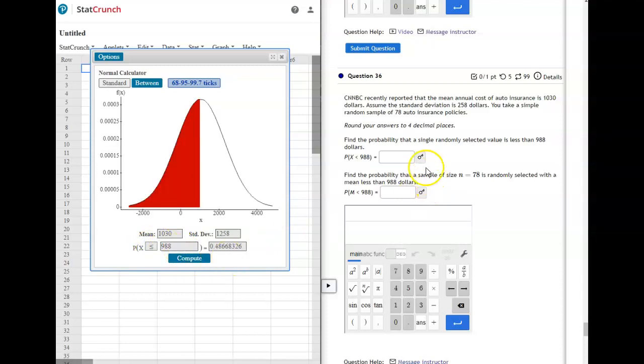So that's going to give us 0.4867. That one's a little off, not sure why, but it should be 0.4867 there.